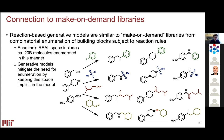This connects back to the notion of make-on-demand libraries, where you combinatorially combine starting materials and reaction rules to enumerate all possible products. The 20-billion compound virtual chemical space I mentioned earlier was created this way. The role of the machine learning model here is to keep the enumeration implicit — rather than listing 20 billion structures, we teach the model what building blocks and reactions are accessible, and it explores only the space it needs to.